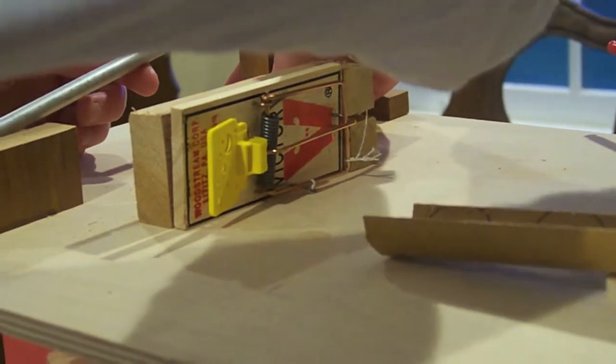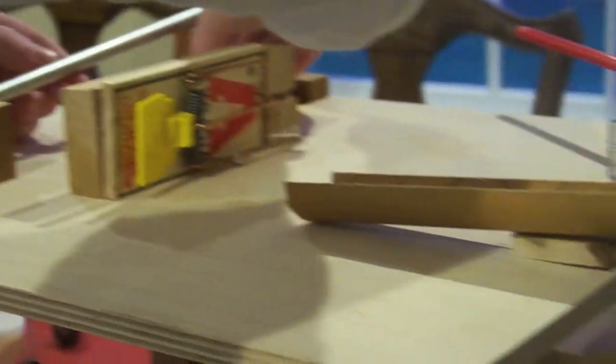Yay, mousetraps! This is the mousetrap. It's hooked onto the little wooden block with some string. This is where the ball that activates the mousetrap sits, being held in by a little nail.